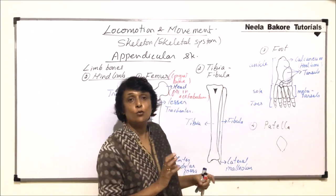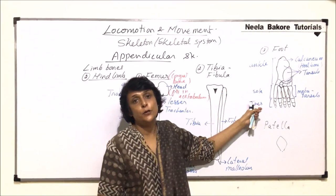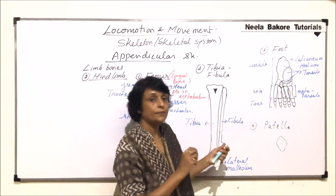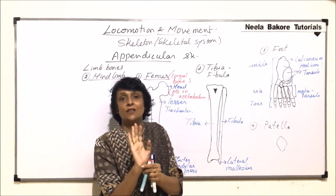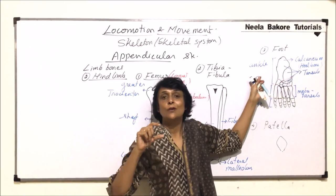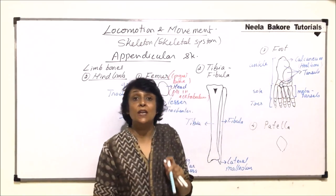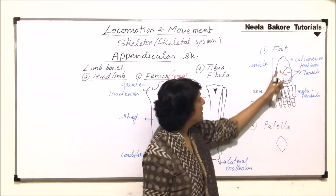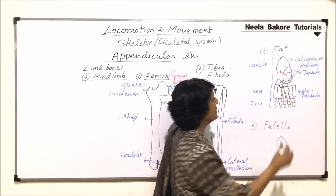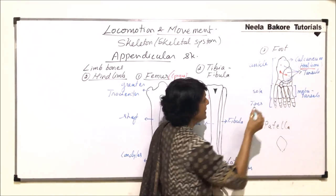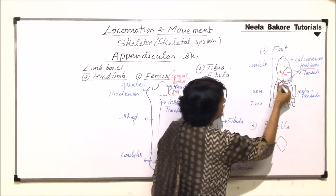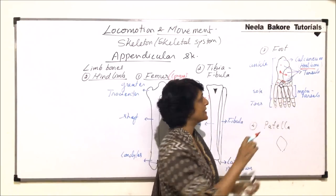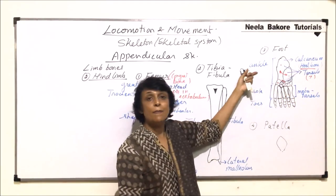The foot is divided into three parts: ankle, sole, and toes. In the ankle region there are small bones known as tarsals. In the case of the hand, the bones in the wrist region are known as carpals; here in the ankle region the bones are known as tarsals, and these bones are arranged in three rows. The first row has two bones, the second row has one bone, and the third row has four bones. In total there are seven tarsals making up the ankle part.